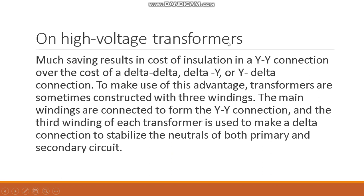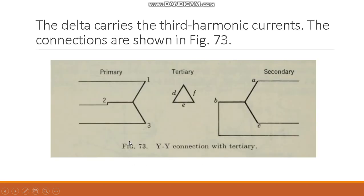At high voltage, much saving results in the cost of insulation in the Y2Y connection over the cost of delta-to-delta, delta-to-Y, or Y-to-delta connection. To make use of this advantage, the transformers are sometimes constructed with three windings. The main windings are connected to form the Y2Y connection, and the third winding of each transformer is used to make a delta connection to stabilize the neutral of both primary and secondary circuits. The delta carries a third harmonic current.